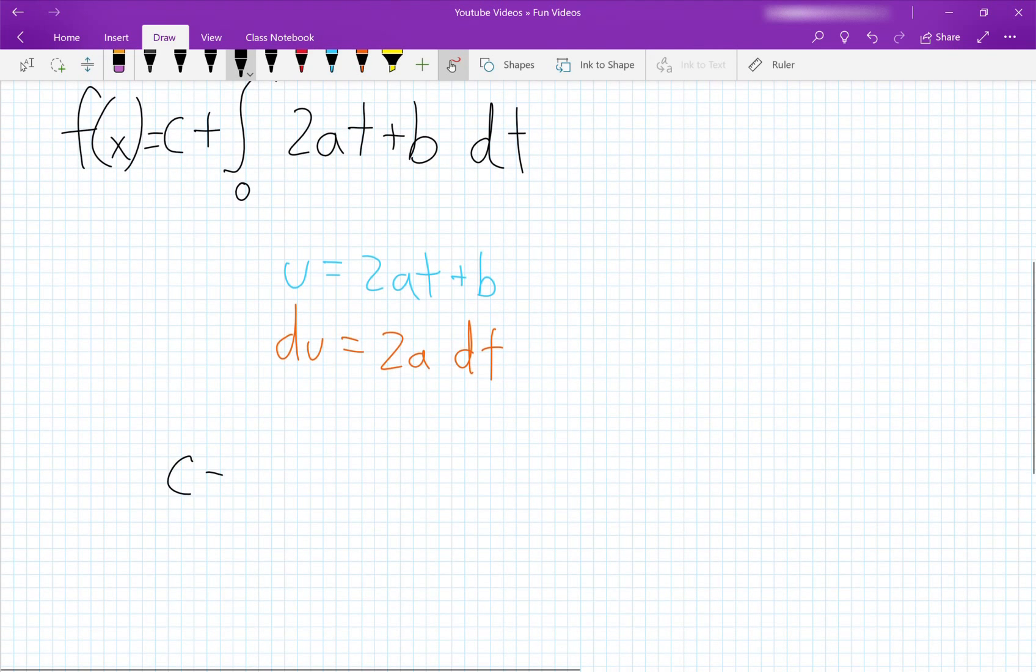You can do this by multiplying the definite integral by 1 over 2a on the outside from 0 to x. So we have our 2a.